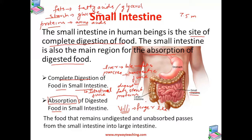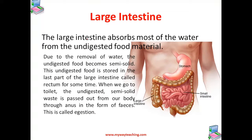A part of the food we eat cannot be digested by our body. The food that remains undigested and unabsorbed passes from the small intestine to the large intestine. The large intestine is about 1.5 meters long and is called 'large' because it is quite wide compared to the small intestine.